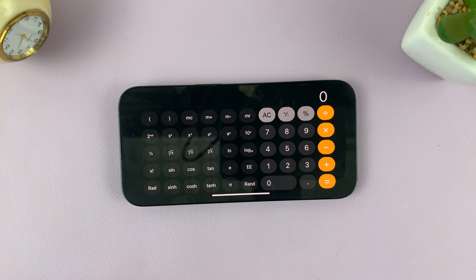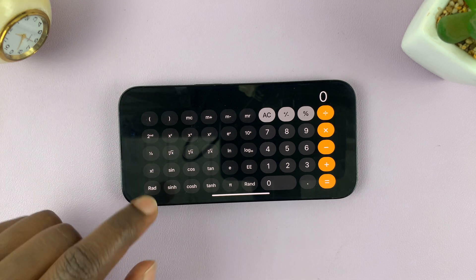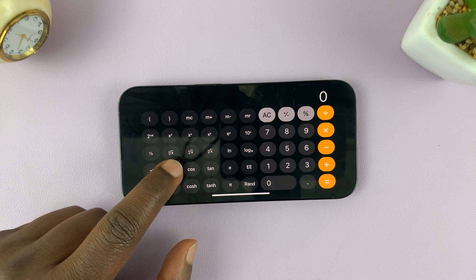So let's say you want to calculate the square root of 25. Now this is the square root button right here, the one with the square root of x icon.